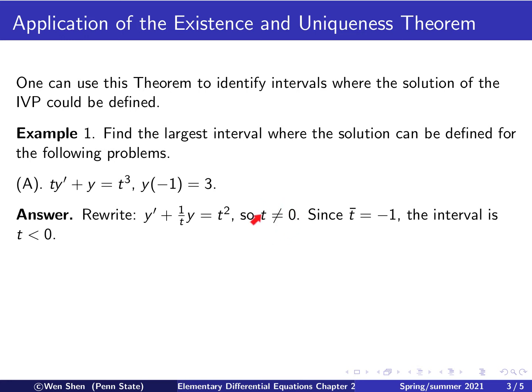We can think that this is a bad point. At t equals 0, solution undefined. Now look at the initial condition. It's given at t bar, which is negative 1. So from negative 1, you can extend to the left to negative infinity. Everything is fine. And if you extend it to the right, then you will hit t equals 0, which you cannot cross. Therefore we conclude the interval is t less than 0.